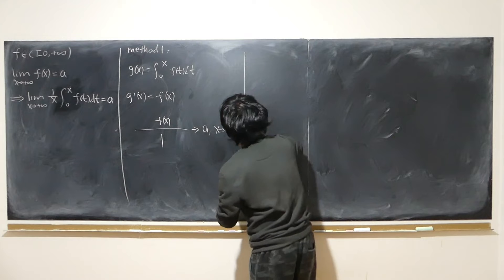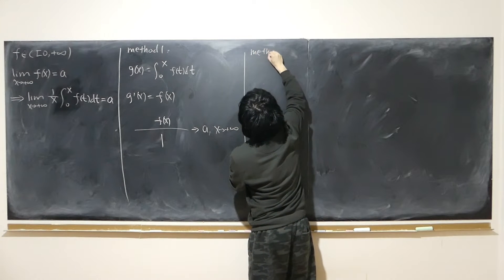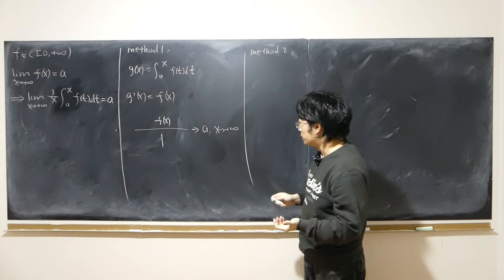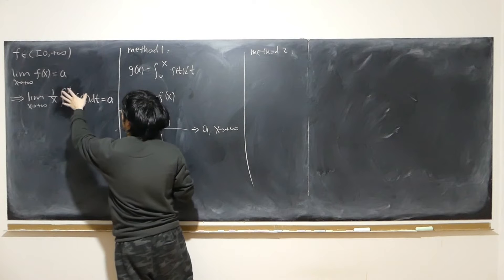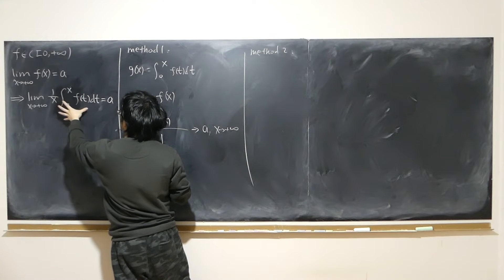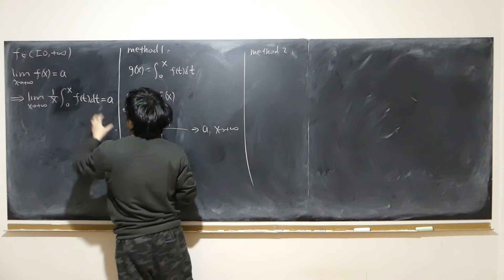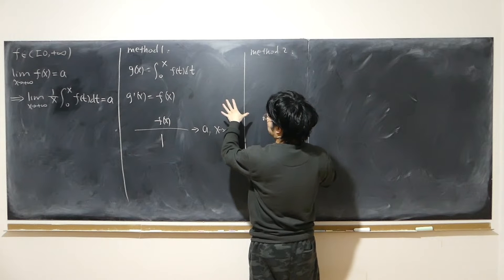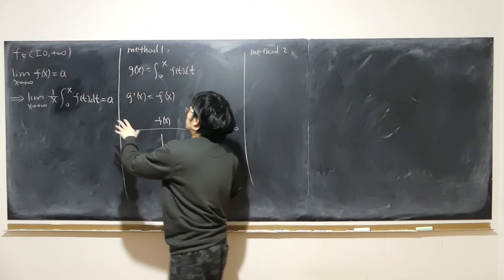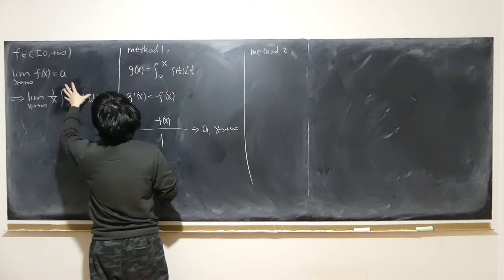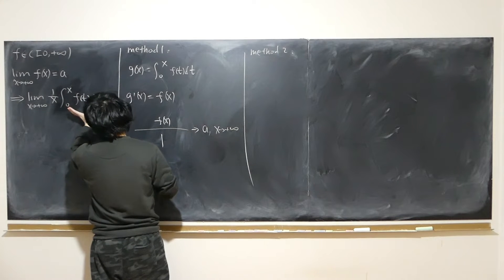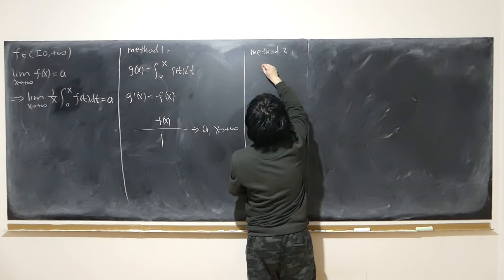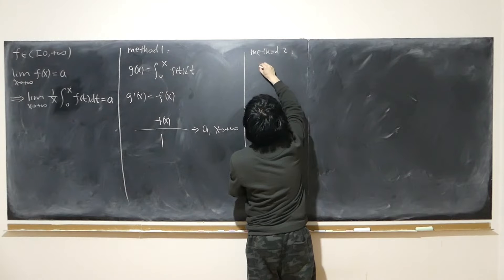The second method: after I'm done with method 2, you'll realize that we don't even need the condition of continuity. All we need is f to be Riemann integrable. Since f is continuous, it is Riemann integrable. Now if f(x) approaches a, let me use a special case: if a is equal to 0, then the limit equals 0.